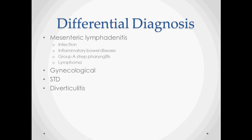Other conditions that need to be ruled out are gynecological conditions, especially PID and ectopic pregnancy, which you can usually rule out fairly easily with an ultrasound, a pregnancy test, and a beta-HCG test. STDs and diverticulitis are also things that need to be ruled out.